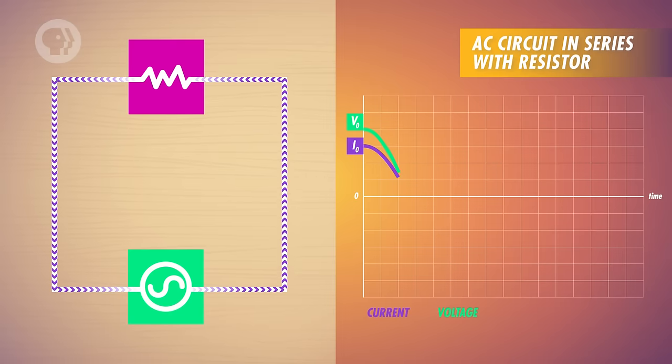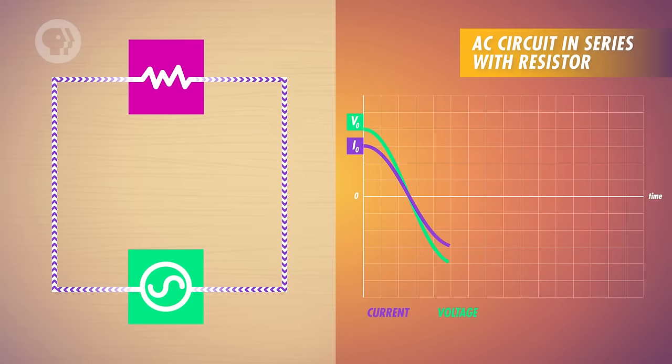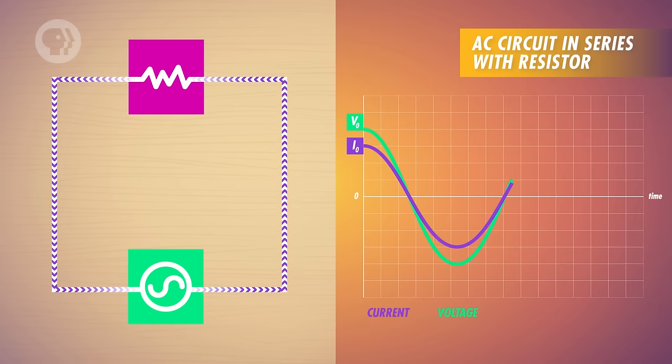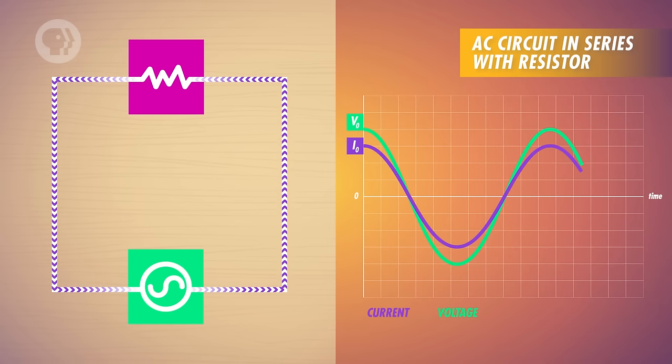Now let's go back to AC circuits and combine an inductor, a resistor, and a capacitor all in one circuit. Each component will behave differently when connected to the source of alternating voltage. Before we combine everything, let's look at each component as if it alone were in series with the source. Starting with the resistor: when the voltage is at peak voltage, the current through the resistor will also be at peak current. Since the voltage and current peaks occur at the same time, the two are said to be in phase.